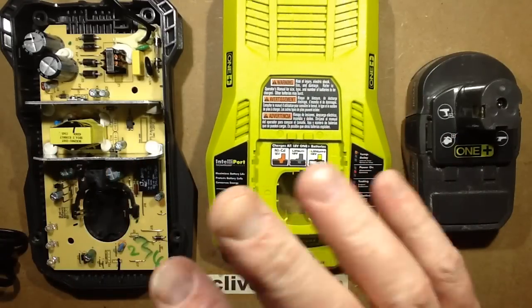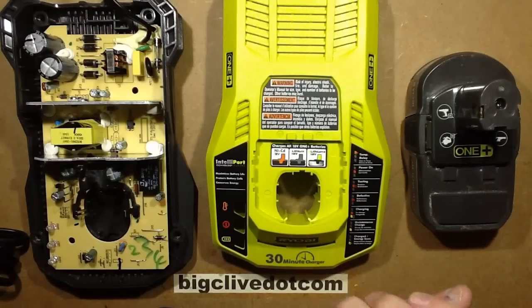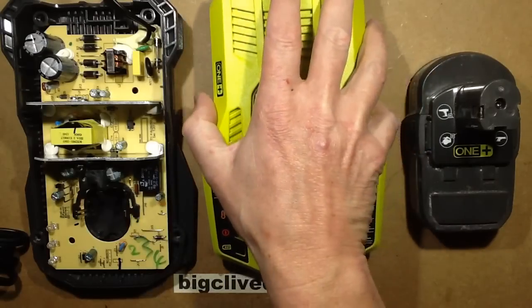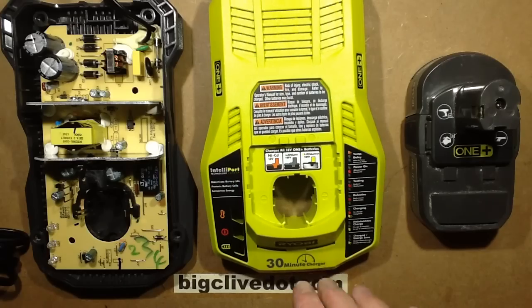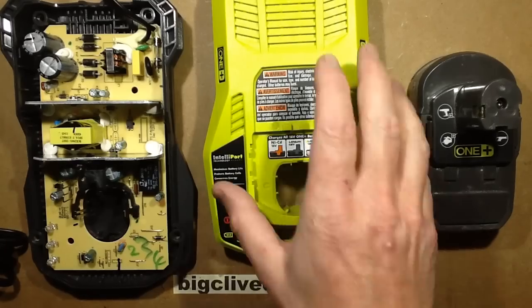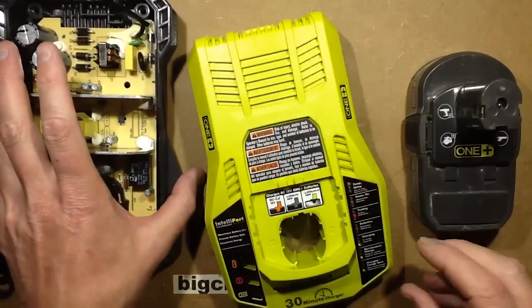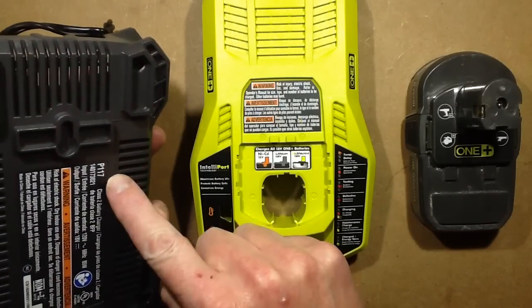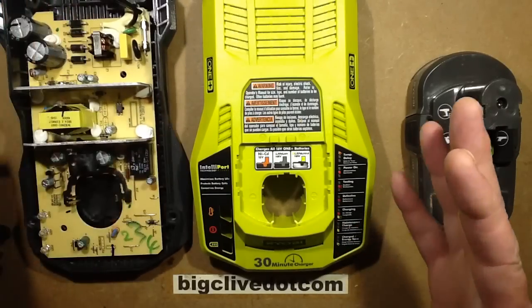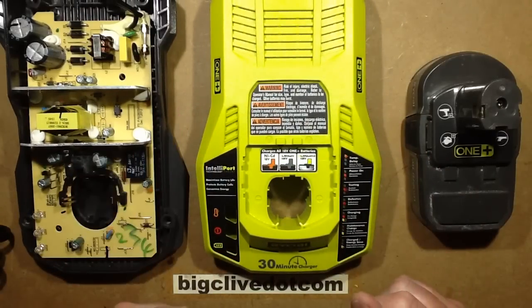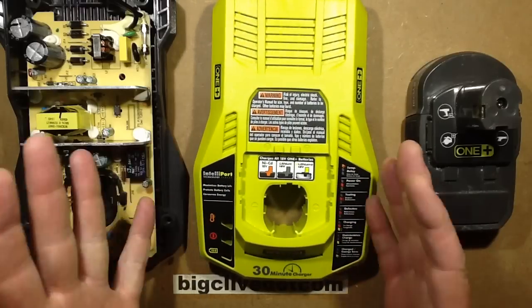And it came to my attention recently, rather annoyingly, that it's a lot cheaper to buy kits of these tools from America. The only downside is that they come with this very generously sized charger. They don't even sell this charger in the UK, it's a 30 minute charger. It's the P117 charger and they come from America with this but it's only for 120V. They don't seem to sell them in the UK, it's odd.